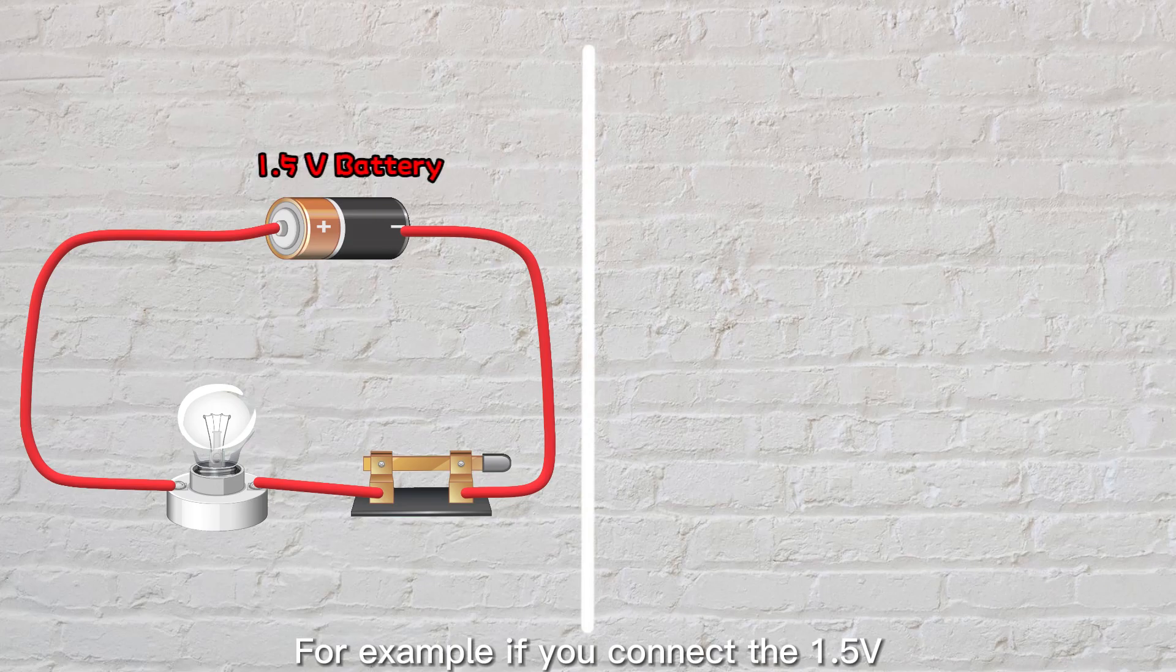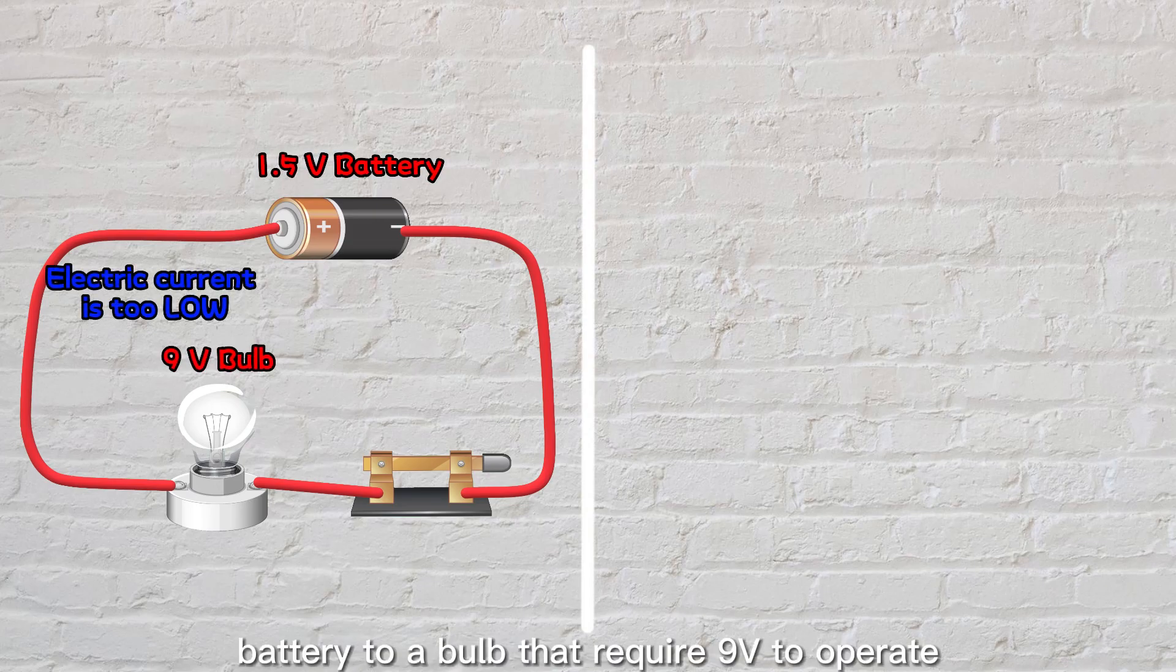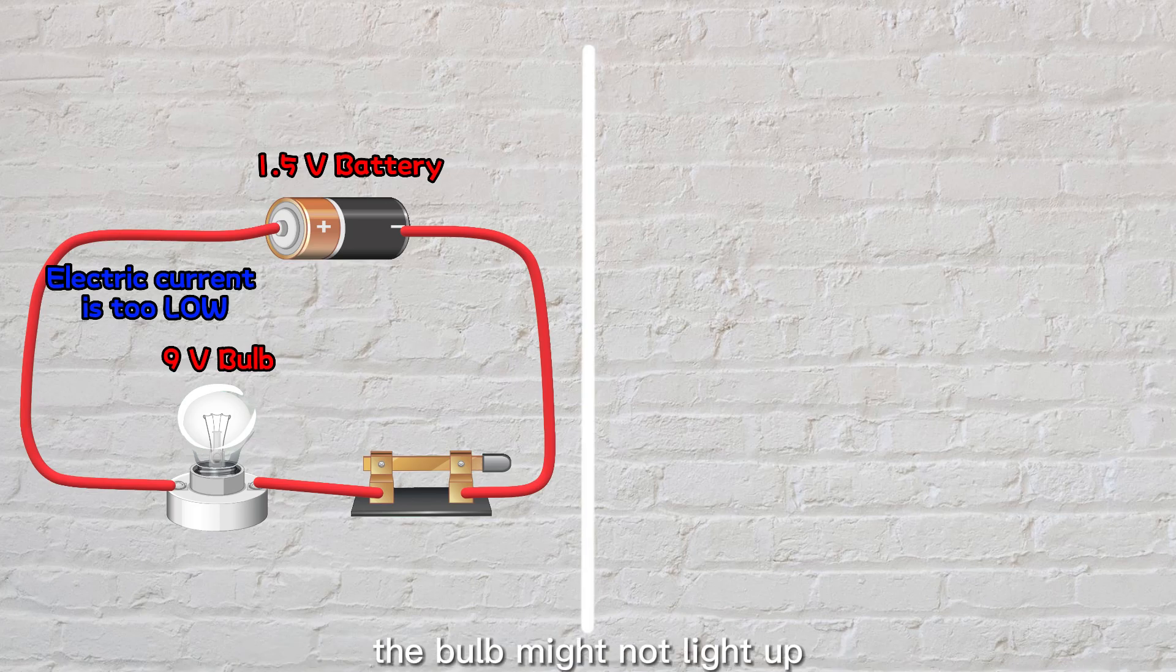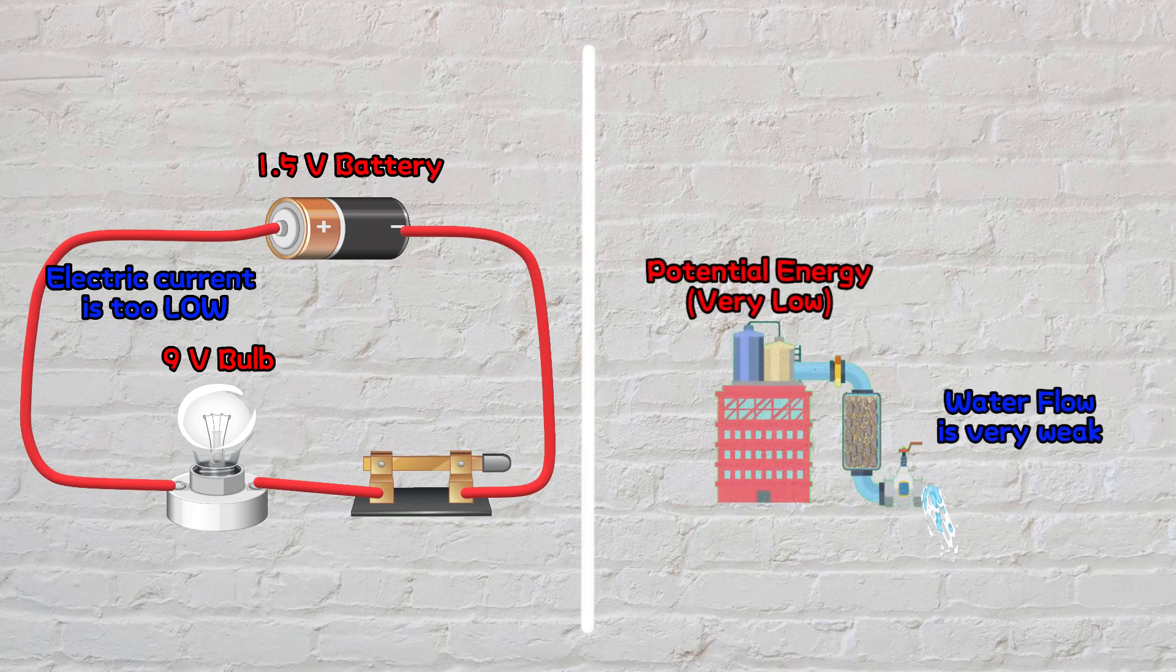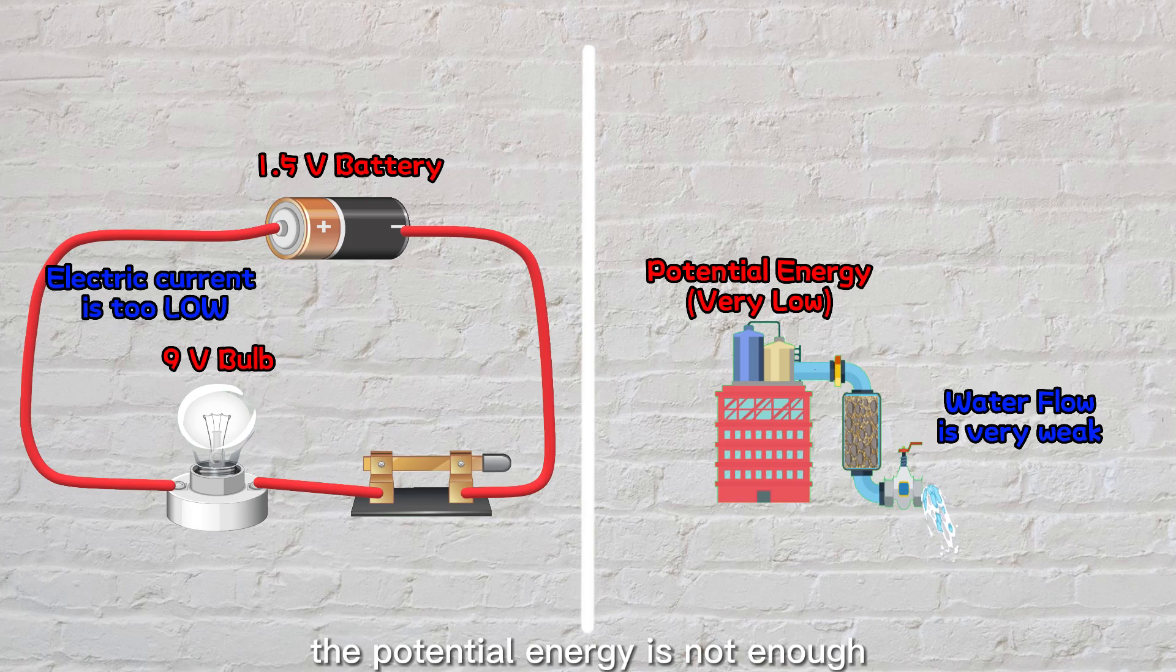For example, if you connect a 1.5 volt battery to a bulb that requires 9 volts to operate, the bulb might not light up due to too low electric current flowing through it. Just like if you place the water tank very low, the potential energy is not enough, and the water flow is very weak.